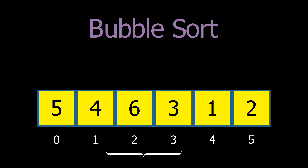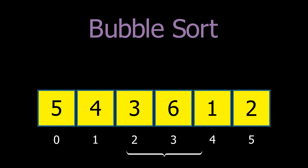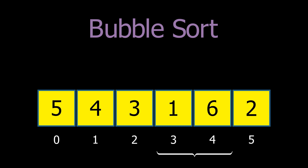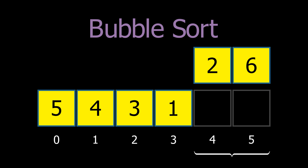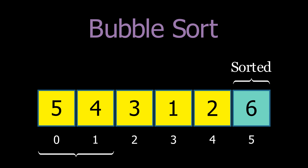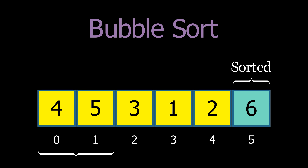If the element on the right is smaller than the one on the left, we swap them. This process is repeated for each pair of adjacent elements, effectively bubbling the largest unsorted element to its correct position at the end of the list. The process continues until no more swaps are needed, indicating that the list is fully sorted.